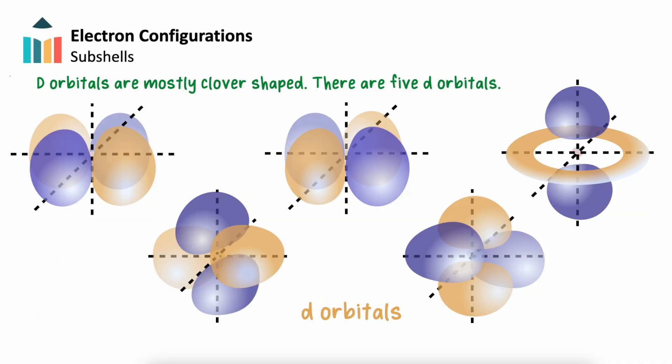D orbitals are mostly clover shaped, like two P orbitals overlapped with each other. There's one unique standout that is shaped like a P orbital with a ring around it. In total, there are five D orbitals.